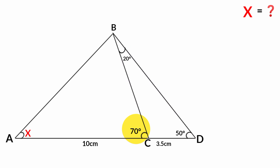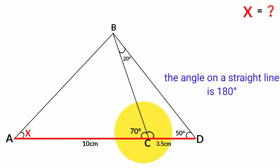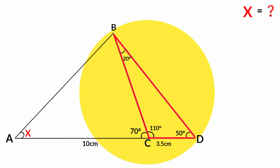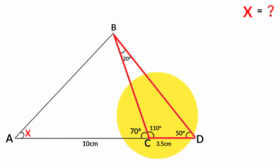This angle and this angle are lying on the same straight line. Since angles on a straight line sum to 180 degrees, we know this must be 180 degrees minus 70 degrees, which is 110 degrees.